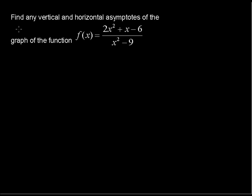Find any vertical and horizontal asymptotes of the graph of the function f of x equals 2x squared plus x minus 6 all over x squared minus 9.